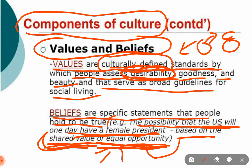Now, beliefs are specific statements that people hold to be true. Based upon those values, people have certain beliefs. For example, when talking about politics, politicians and the general public believe in the possibility that the U.S. will one day have a female president. That is their conviction, based on the shared culturally defined standard of equal opportunity.